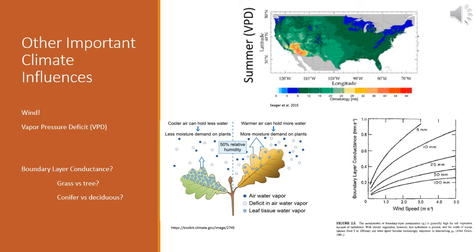Our regional climate doesn't just receive less precipitation than most forested landscapes — it also influences a couple of other associated variables that have physiological consequences for vegetation: wind and vapor pressure deficit, which is the deficit between the moisture in the air and how much moisture the air can actually hold. The larger that deficit, the greater the demand on the vegetation to transpire water from the soil through the leaf surface to the atmosphere. These two play important roles in the ability of a tree to tolerate a growing site.